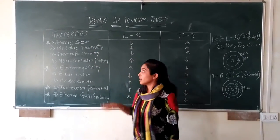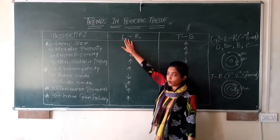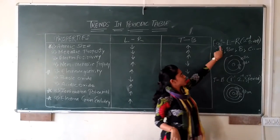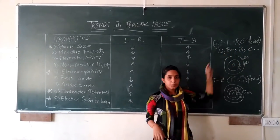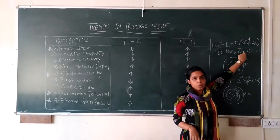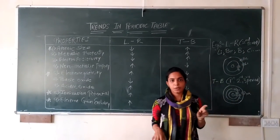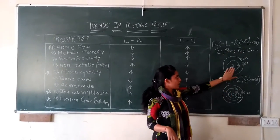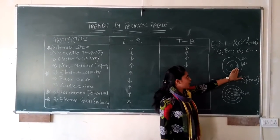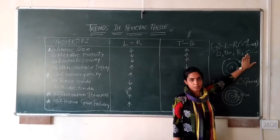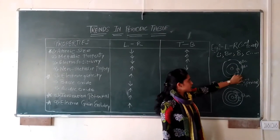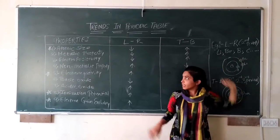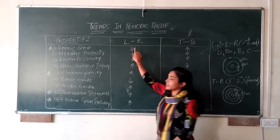Now, there are trends. From left to right, atomic size decreases. For example, in the second period — lithium, beryllium, boron, carbon — as we go left to right, electrons enter into the same shell, and since no new shell is added, the atomic size decreases.